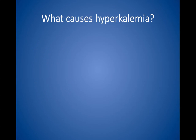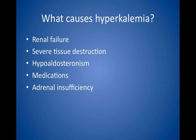What causes hyperkalemia? Renal failure, either acute or chronic. Severe tissue destruction, because potassium has a high intracellular concentration. Hypoaldosteronism — watch for hyporeninemic hypoaldosteronism in diabetes. Medications: stop potassium-sparing diuretics, beta blockers, NSAIDs, ACE inhibitors, and angiotensin receptor blockers. And finally, adrenal insufficiency, which is also associated with low sodium and low blood pressure.